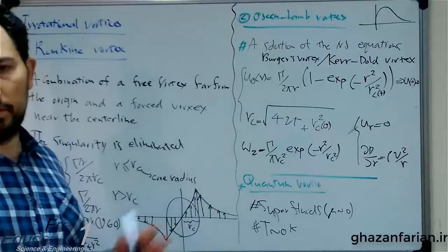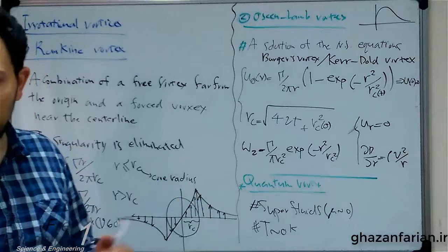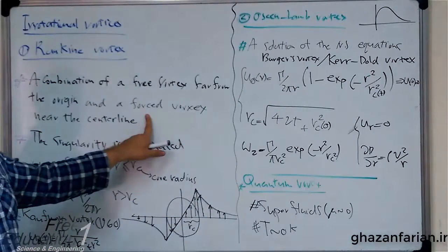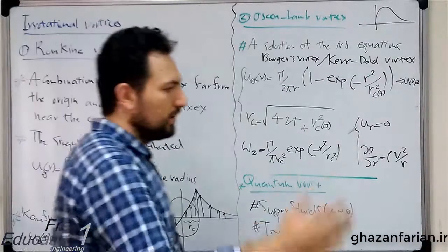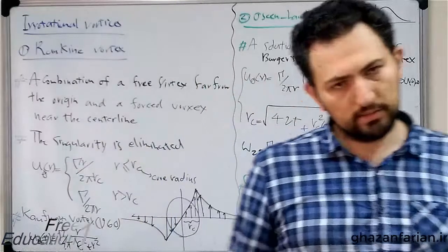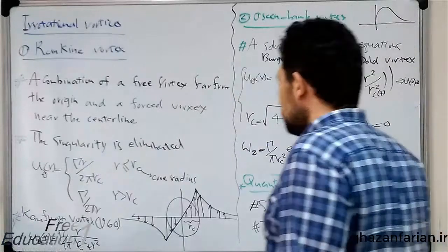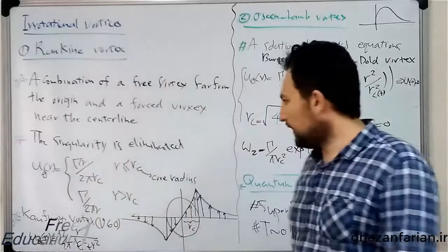Consequently, based on the forced vortex model, the velocity at the origin is zero and increases linearly with the distance from the origin. This way, the singularity is eliminated.